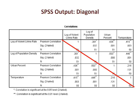The correlation of a variable with itself is a perfect positive correlation having a value of 1. On this matrix, these perfect correlations fall along the diagonal.